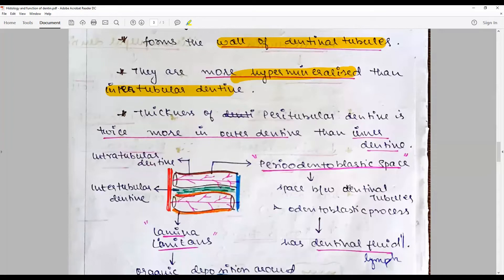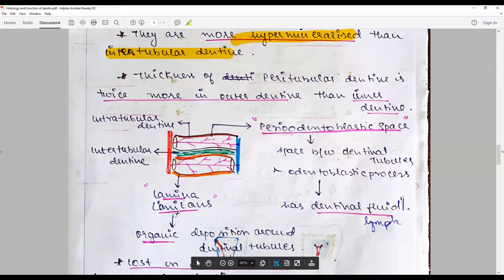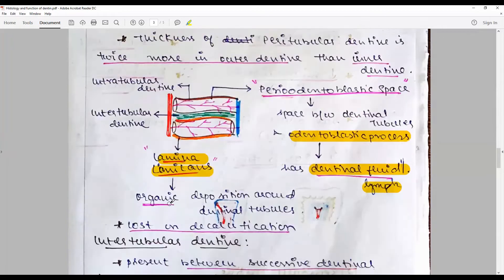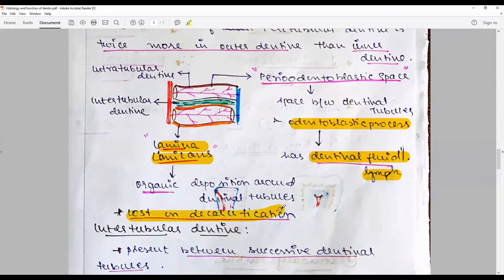The space between the dentinal tubules is lined by a dentinal fluid or dental lymph, which is the basis of the hydrodynamic theory. The odontoblastic process is enriched in dentinal fluid. The periodontoblastic space is limited by a lamina limitans, which is an organic deposition around the dentinal tubules and lost in decalcification process, appearing as a small minute space.